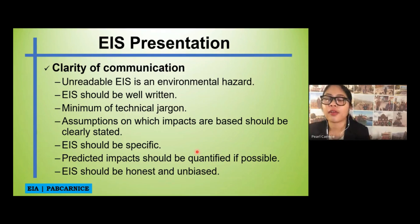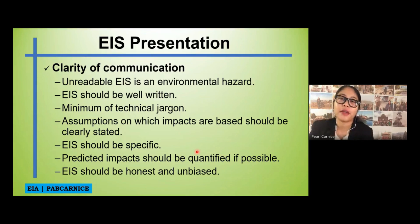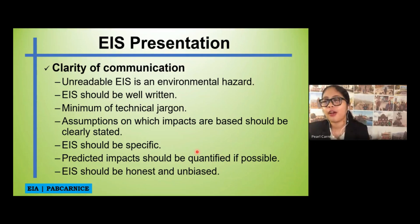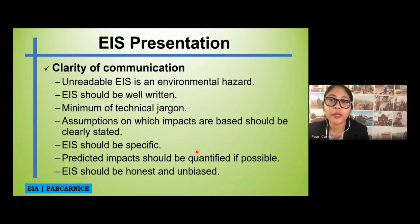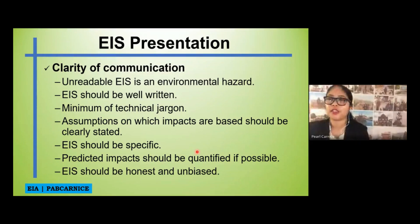The EIS should be specific to the particular project or activity being studied. For example, if your project is the EVSU College of Medicine building, you should not present information for an engineering building, as they may have different requirements in terms of building design. Predicted impacts should be quantified if possible. In a real EIS document, impacts should be quantified, even though in your study they may be based on assumptions.